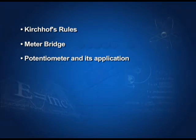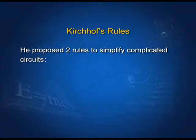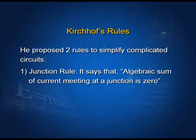Kirchhoff's rules — as we know, Ohm's law is used for simple circuits. If we have complex circuits, then it becomes very difficult to use Ohm's law. So, Kirchhoff proposed two rules to simplify complicated circuits. The first law is known as the junction rule. It says that the algebraic sum of the currents meeting at a junction is zero.